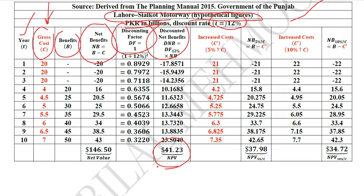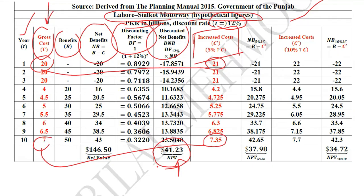The NPV is 41.23 and we want to see if it decreases when we increase the cost. We apply a 5% increase in cost: 20 becomes 21 and 7 becomes 7.35, and you can calculate the remaining values in this column accordingly. The net benefits are now calculated using the new costs and old benefits, since at any one point sensitivity analysis is done from the perspective of one variable only. Using this new net benefit column, the NPV is found to be 37.98.